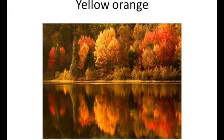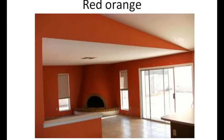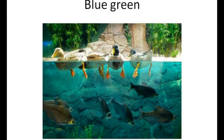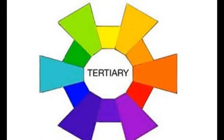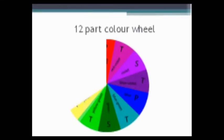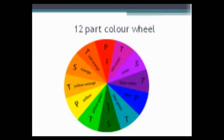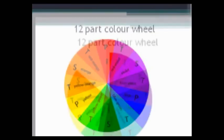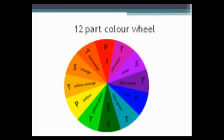The other tertiary colour combinations are yellow-orange, red-orange, red-purple, blue-purple and blue-green. With tertiary colours completed, we have the full colour wheel, comprising three primary, three secondary and six tertiary colours, forming a 12-colour wheel.